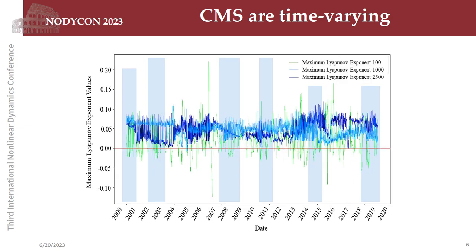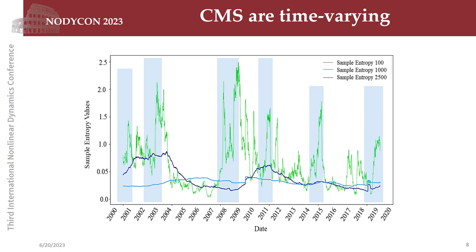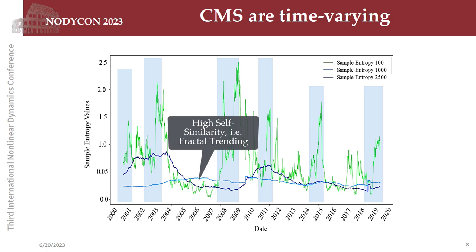Next, we see the maximum Lyapunov exponent dynamics. We see that shifts from positive to negative exponents and large volatility are present. We also see the Lyapunov exponent spectrum sum, which indicates a shift between conservative and dissipative system structures, while yielding large regimes of high volatility. Finally, we see the sample entropy variations, which imply a surge before crisis periods, i.e., an increase in fractality or information density.